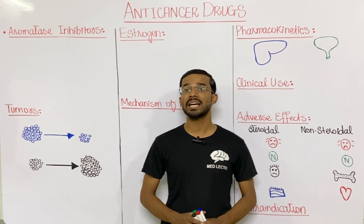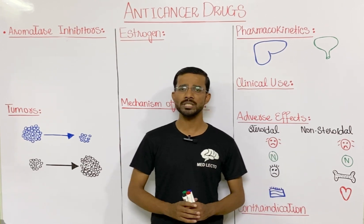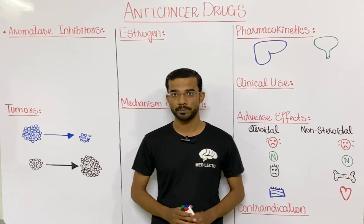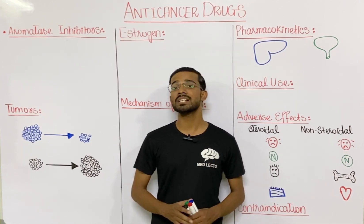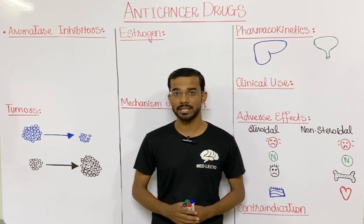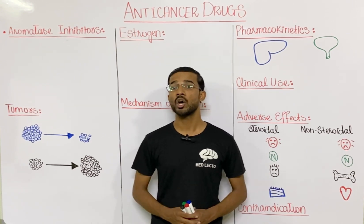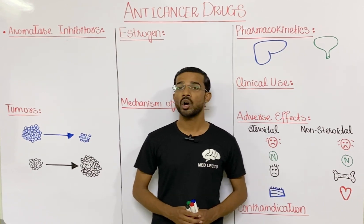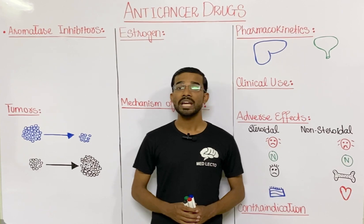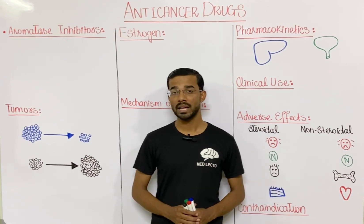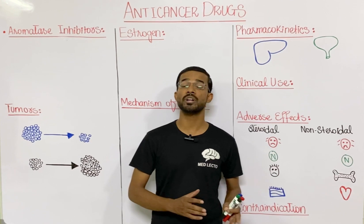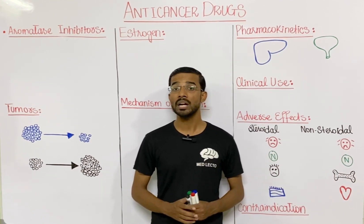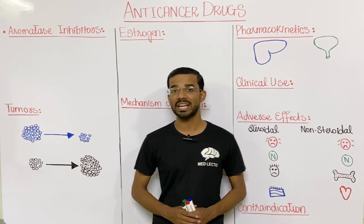Aromatase is an enzyme that is very important in the production of estrogen, which is a steroid hormone. There are some tumors that start progressing when they get hormonal stimulation, so we have to stop the production of the hormone. If we inhibit the aromatase enzyme, then ultimately there is no production of estrogen and no progression of the tumor under the influence of estrogen.